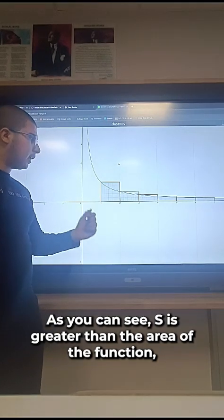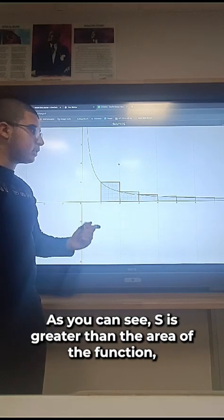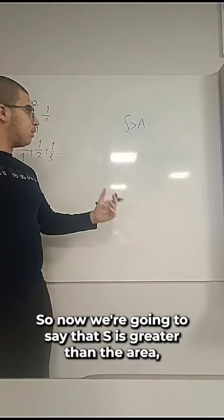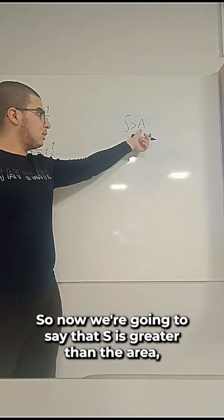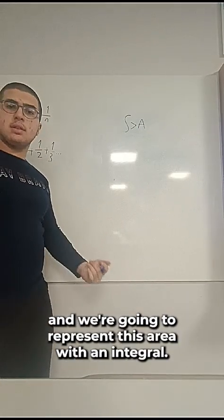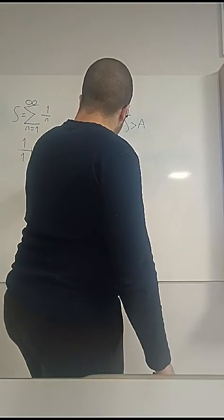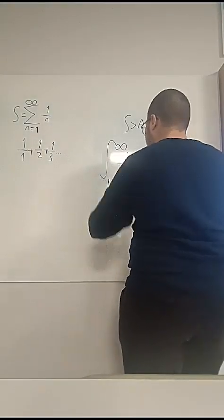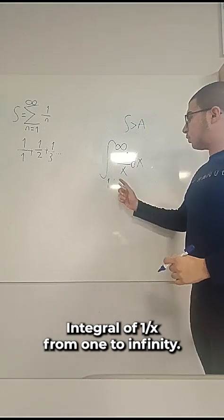As you can see, s is greater than the area of the function 1 over x from 1 to infinity. So now we're going to say that s is greater than the area, and we're going to represent this area with an integral, integral of 1 over x from 1 to infinity.